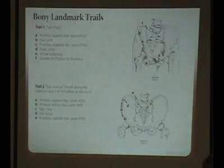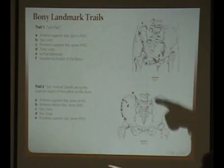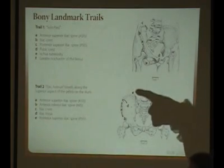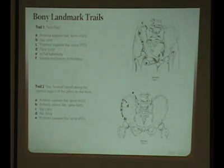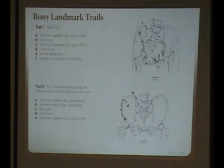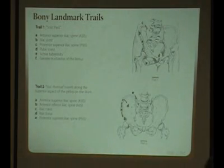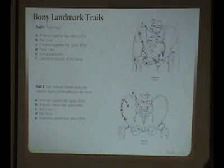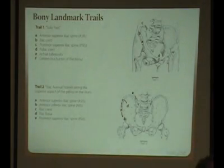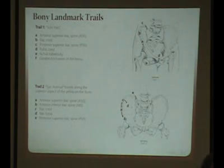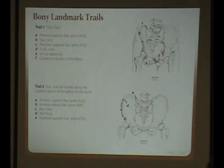We went over going along that crest to find the AIIS. You find the ASIS and you can't necessarily get your hands on the AIIS, but you know it's just deep underneath there. What's the muscle that originates off of that? What's the one muscle in the anterior compartment that crosses two joints?